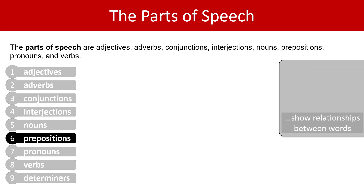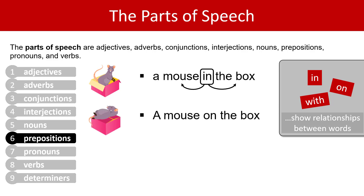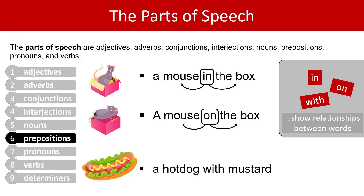Next, prepositions. Prepositions show relationships between words. Here are some examples: in, on, and with. A mouse in the box — the preposition 'in' shows the relationship between 'box' and 'mouse'. Lots of prepositions tell us where things are in relation to other things, and also when things are in relation to other things. A mouse on the box — the preposition 'on' shows the relationship between 'box' and 'mouse'. A hot dog with mustard — the preposition 'with' shows the relationship between 'mustard' and 'hot dog'.